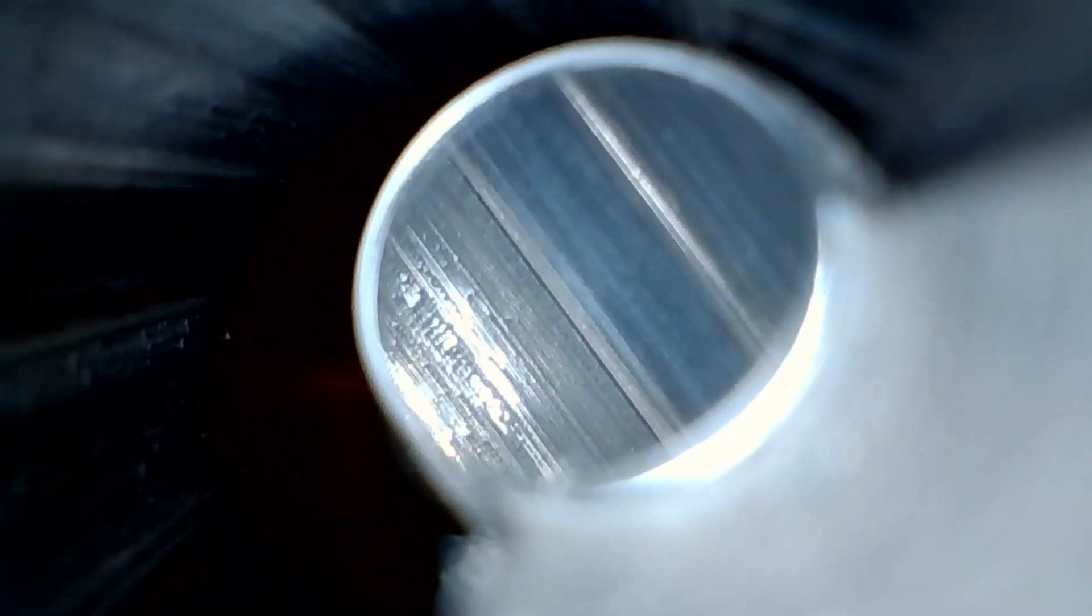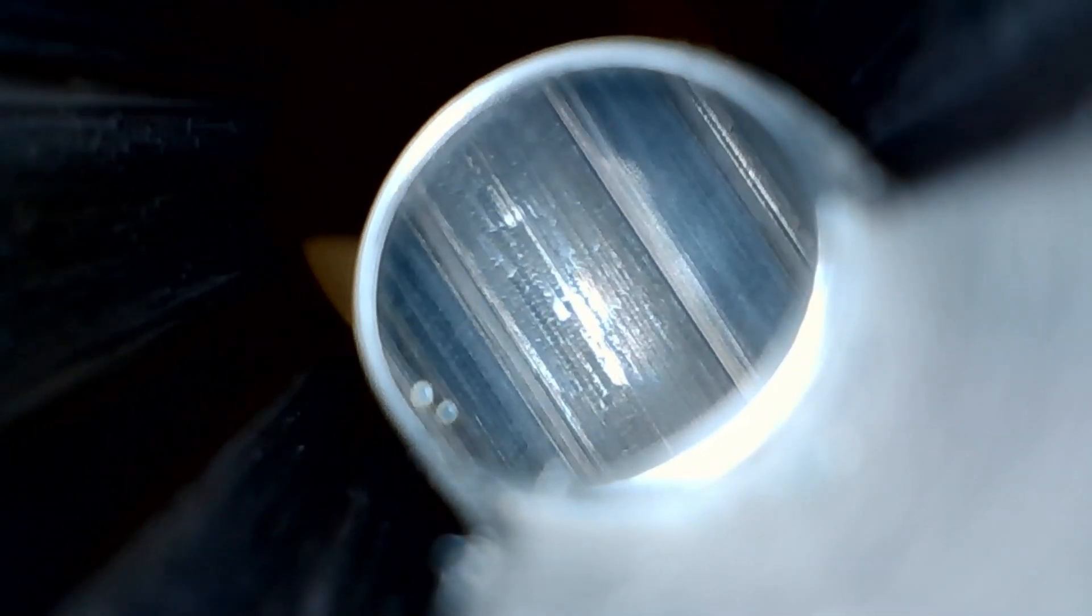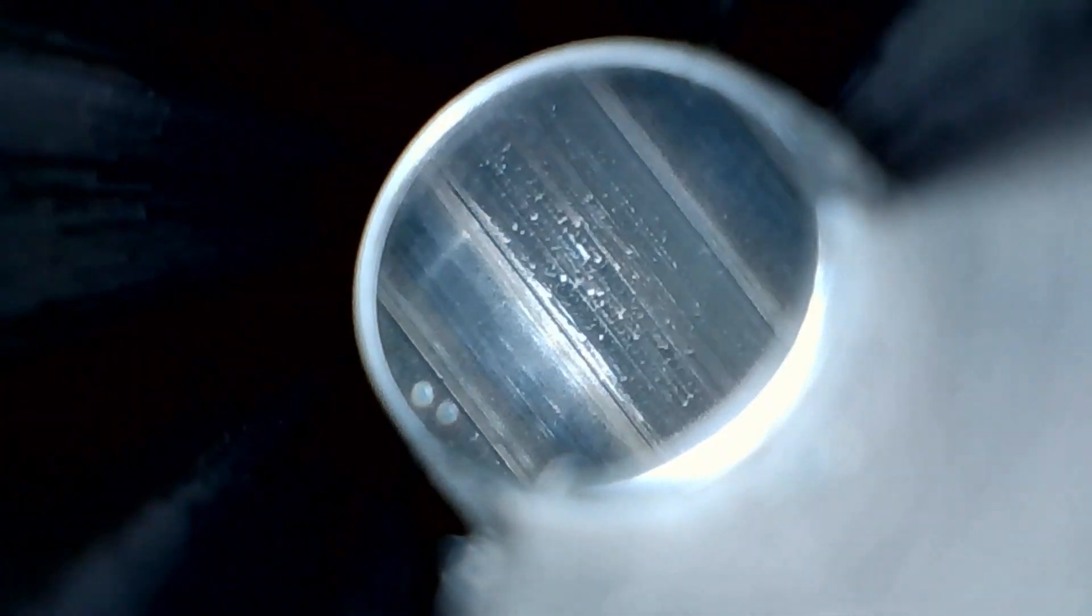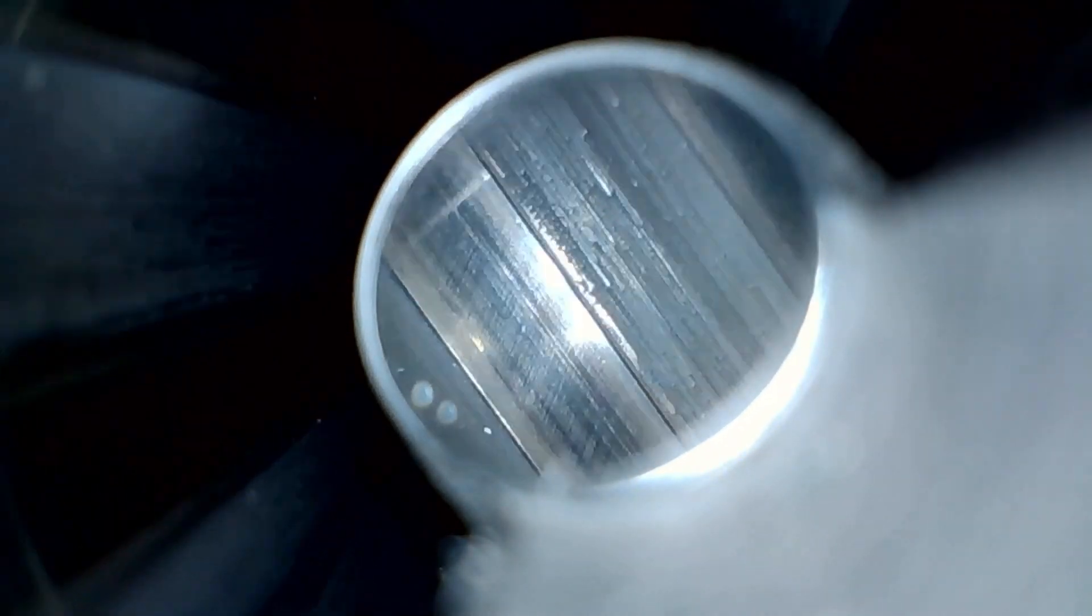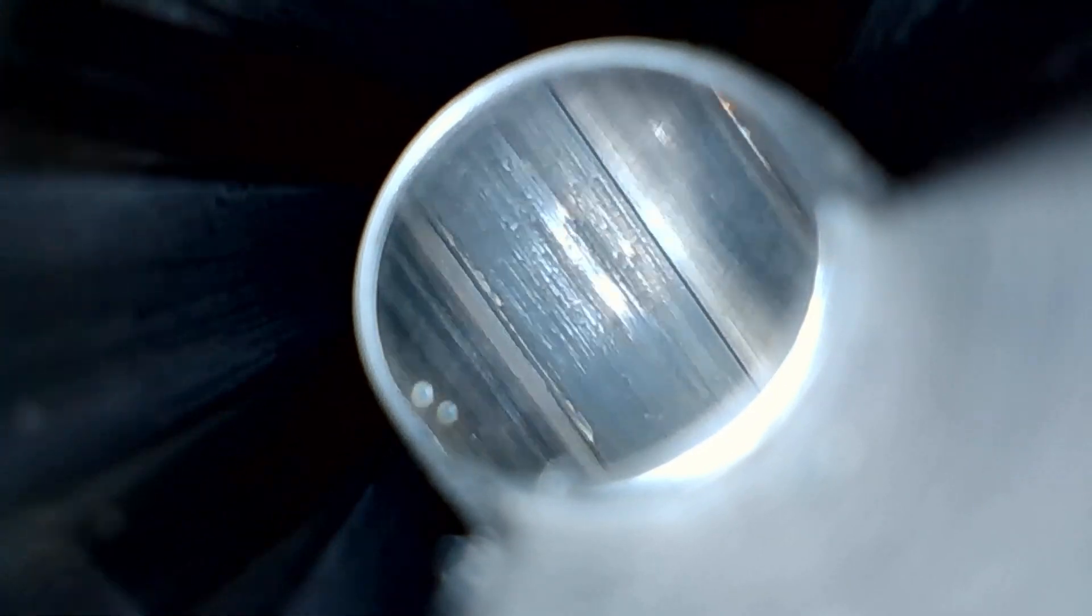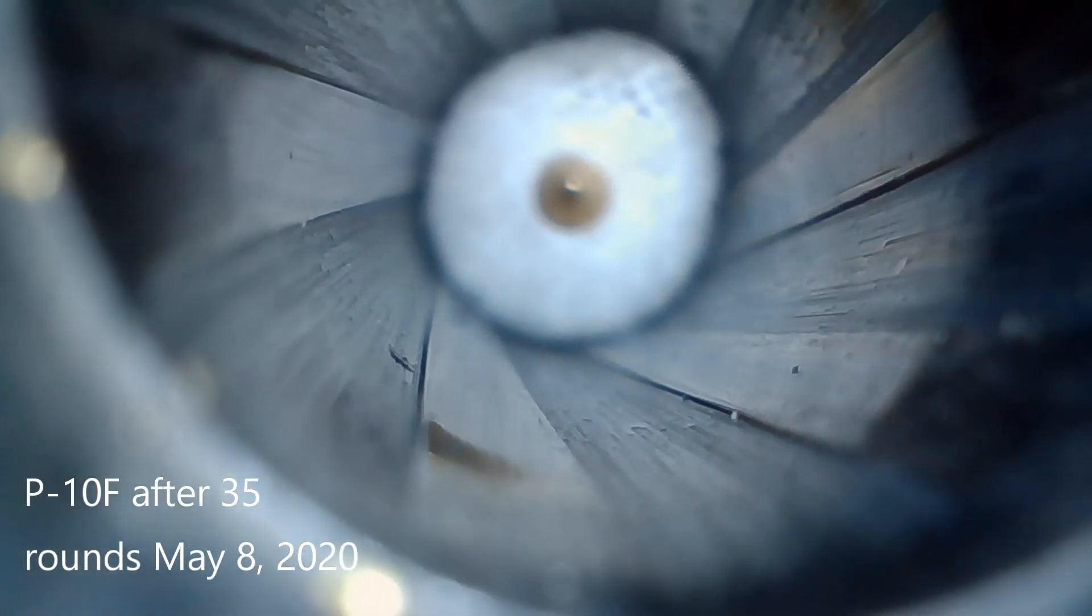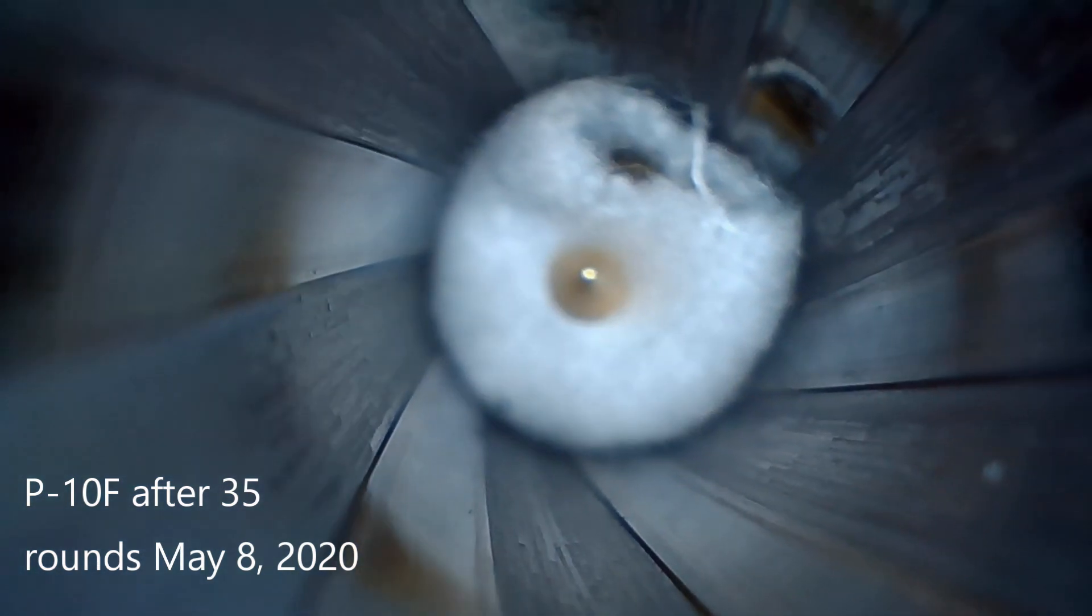Now what I can't tell is whether it's smoothed out from copper or from carbon. It looks like it's got a coating of carbon on it, but once I get the carbon out, it will probably show some copper in these rough grooves.